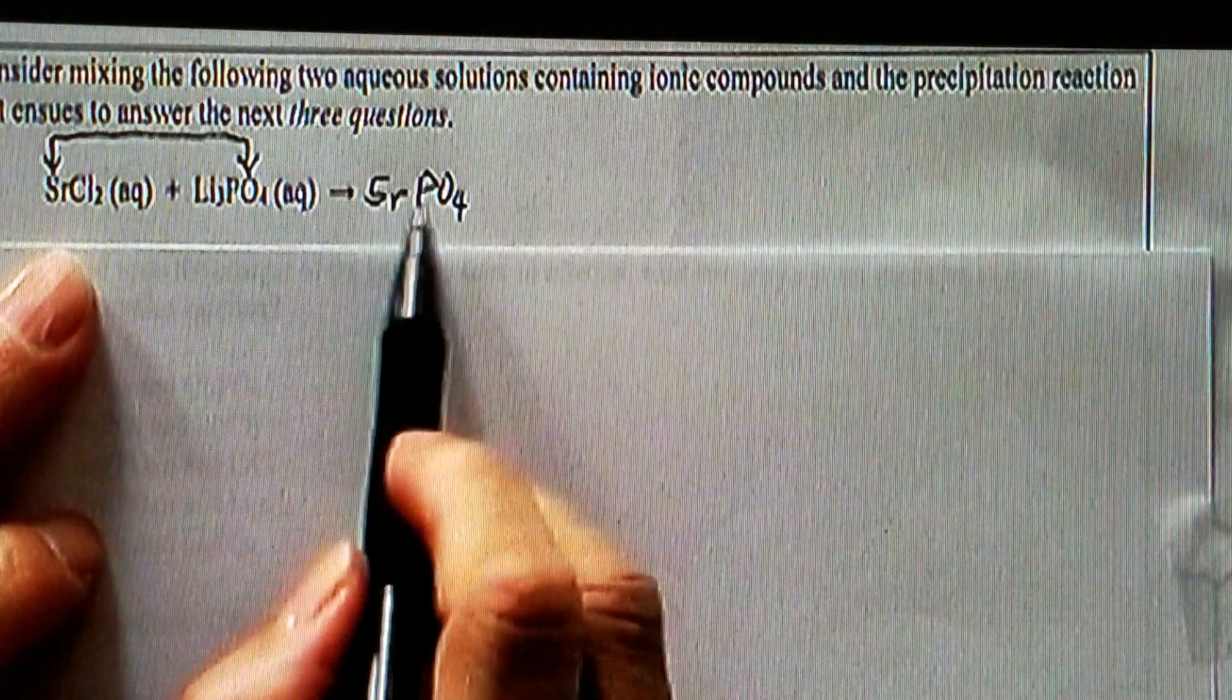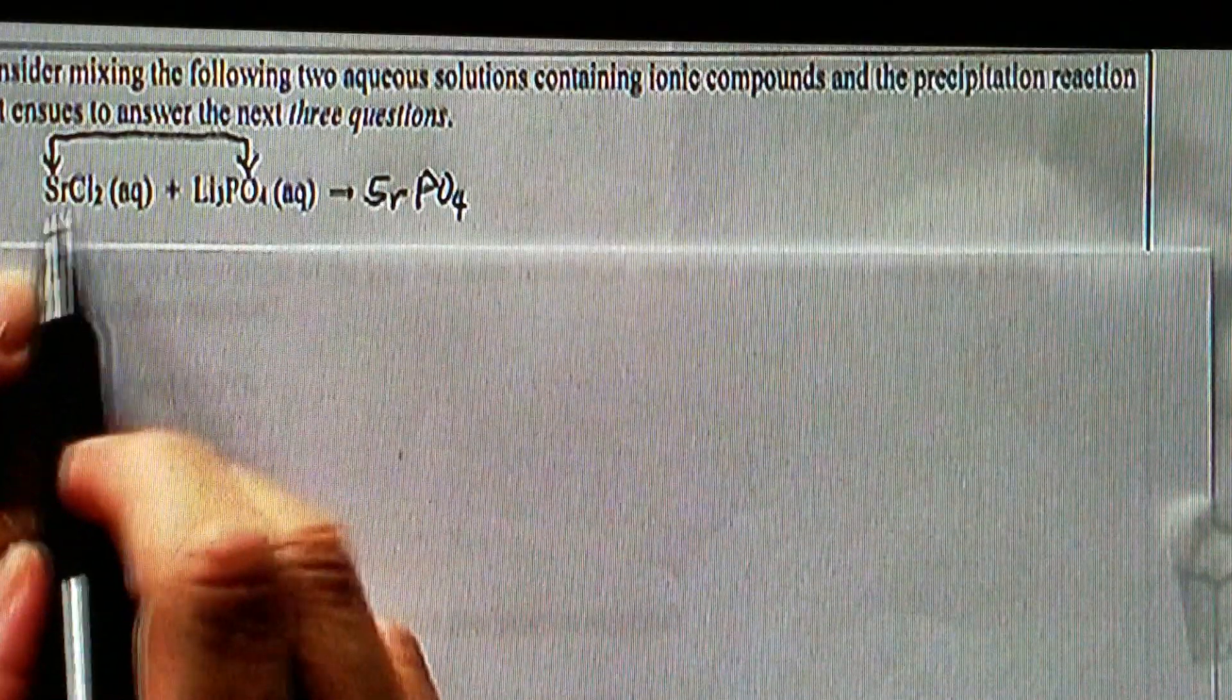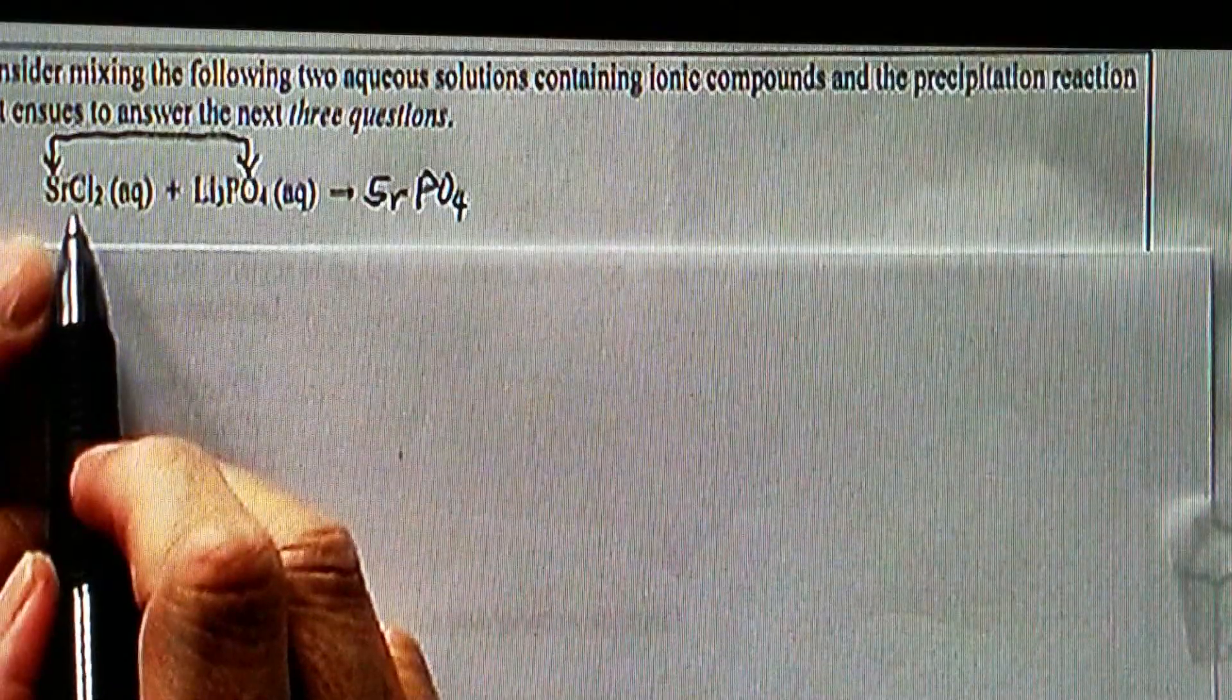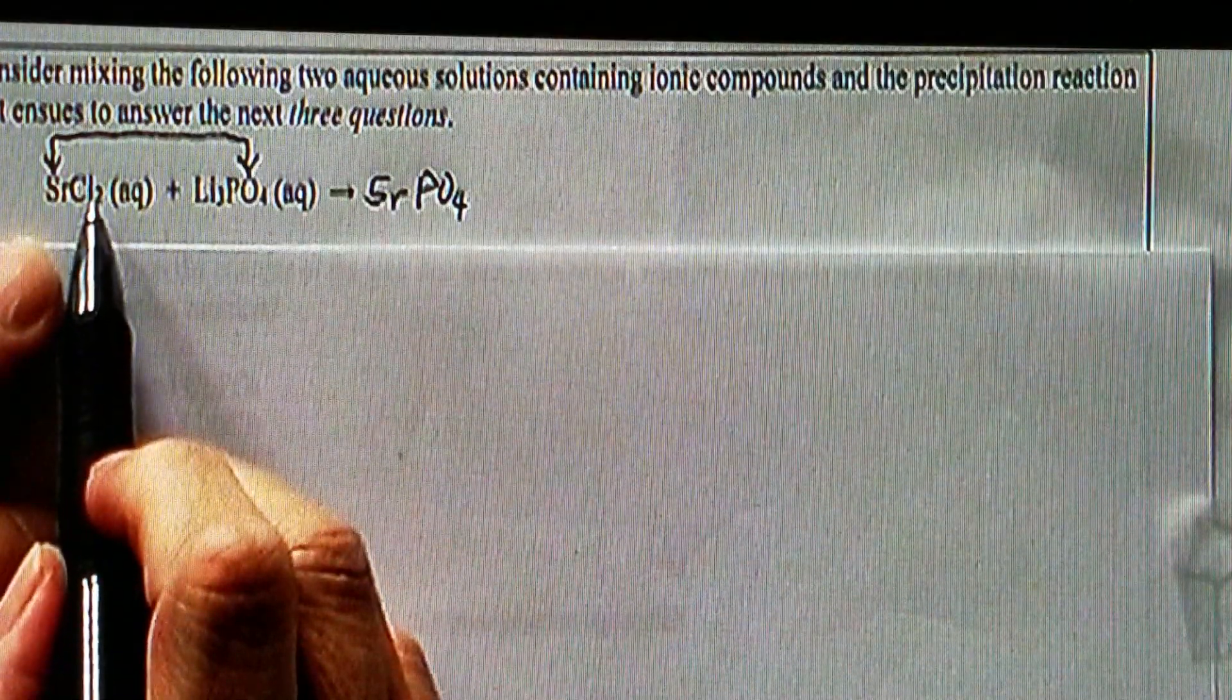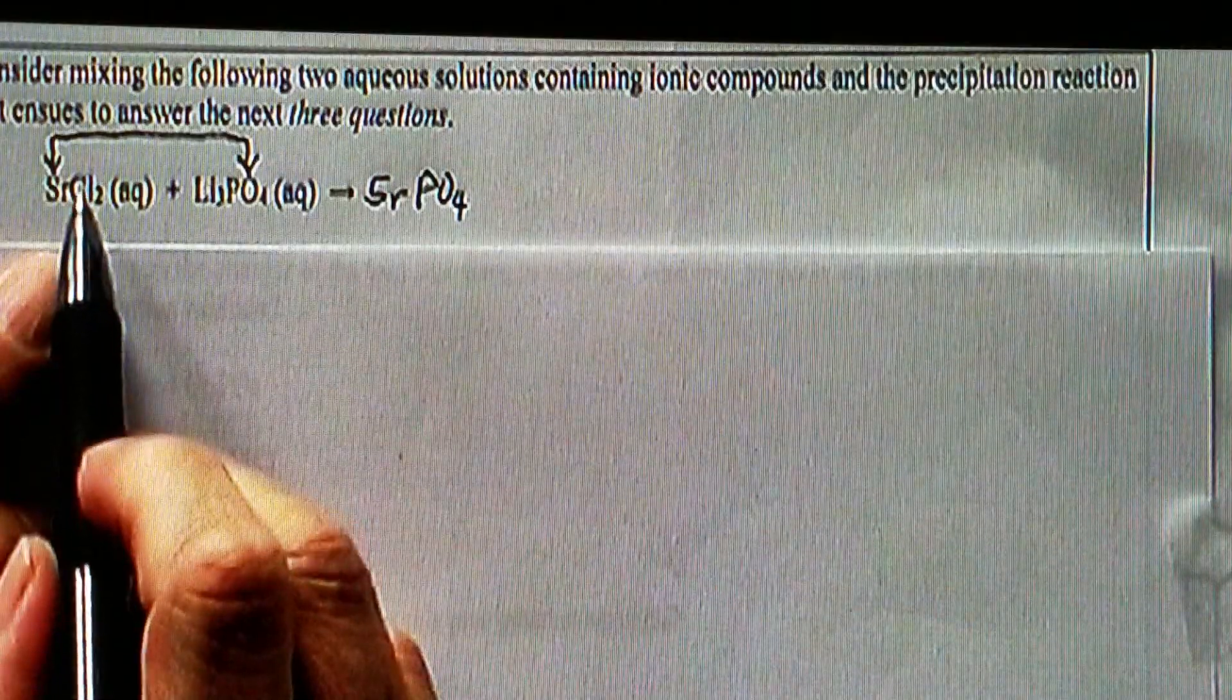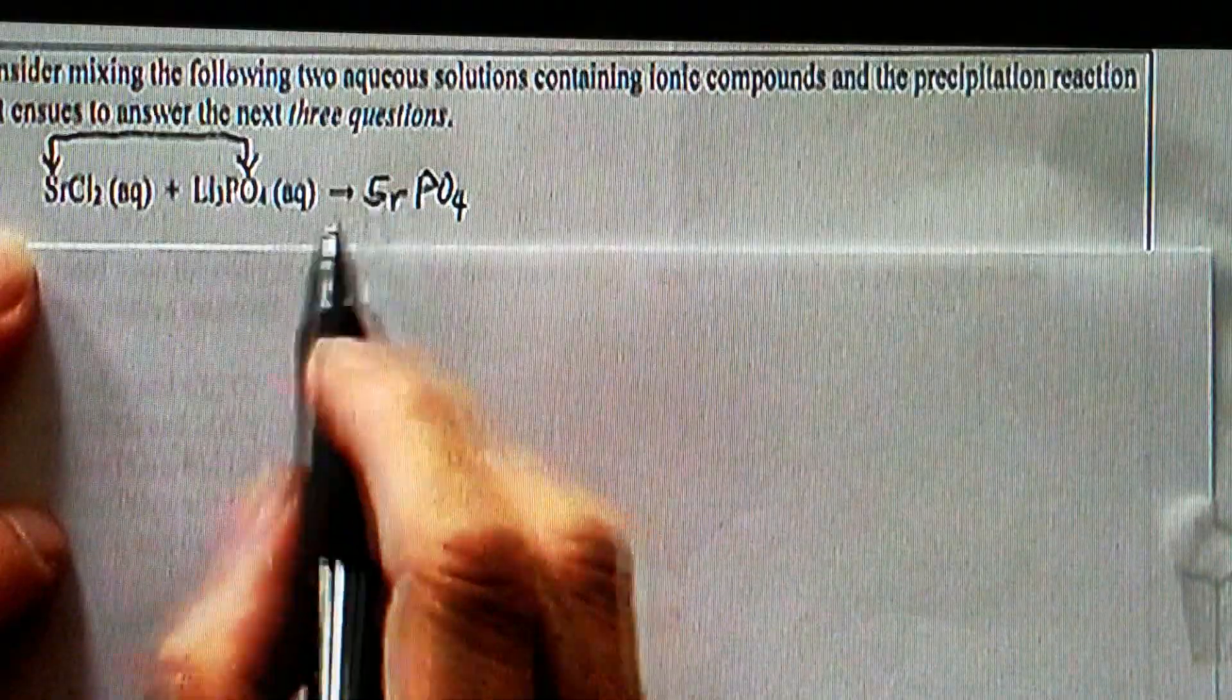We have to balance the charges so that the entire compound is neutral. From this compound right here, that's SrCl₂. Because you have two chlorines here, and each chlorine is a chloride carrying negative one, therefore Sr should carry positive two.